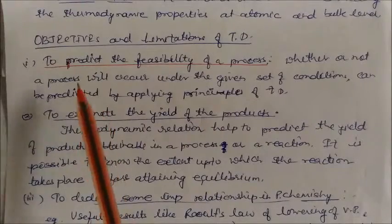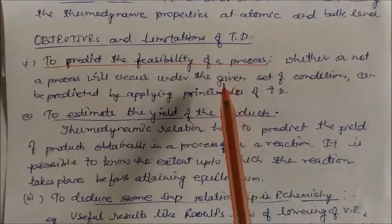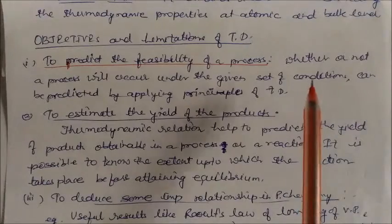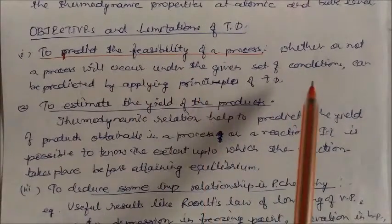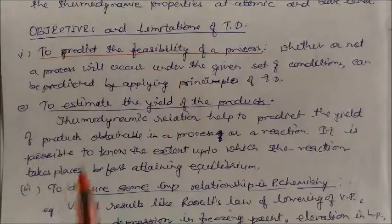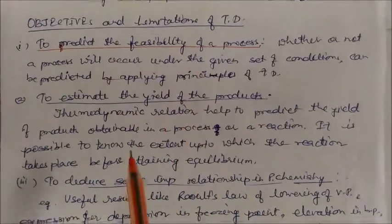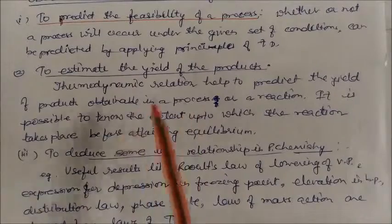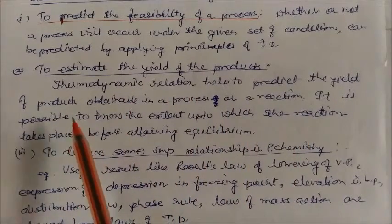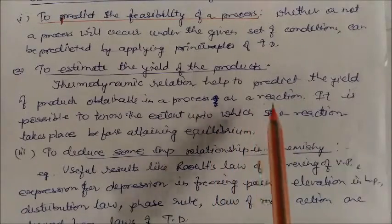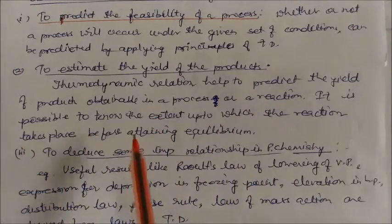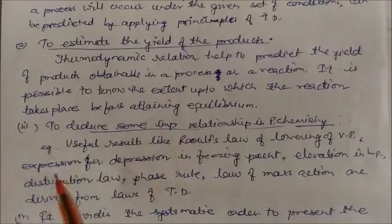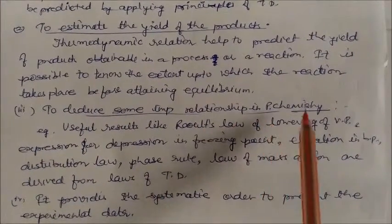The objectives of thermodynamics include: first, to predict the feasibility of a process — whether a physical or chemical process will occur under a given set of conditions can be predicted by applying the principles of thermodynamics. Second, to estimate the yield of the product — thermodynamic relations help predict the yield obtainable in a reaction, and it is possible to know the extent to which a reaction takes place before equilibrium.